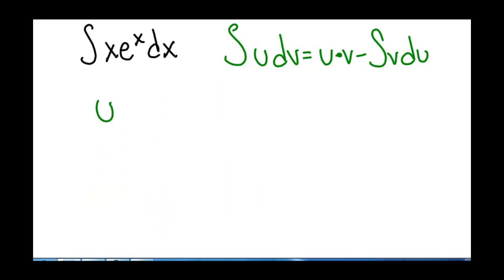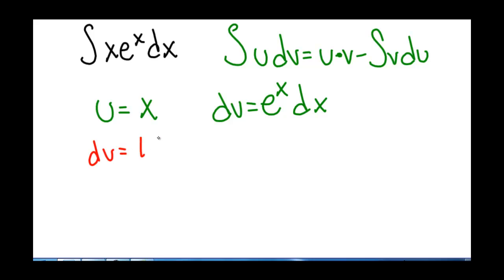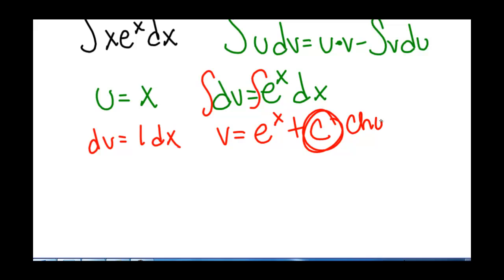So let's try again. Now let's try u equals x and dv equals e to the x dx. When we take the derivative of x, we get du equals 1 dx. This tells us we're on the right track — we've gotten something simpler. Integrating dv, the integral of e to the x dx gives v equals e to the x plus some constant c. But since c can be anything, we choose to let c equal 0, so v is just e to the x.